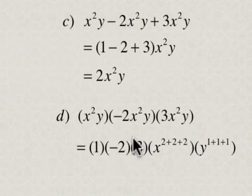So this is 1 times negative 2 times 3, and x squared times x squared times x squared where we add the exponents, and y times y times y. The exponent for y in every case is 1, so we add the exponents there.